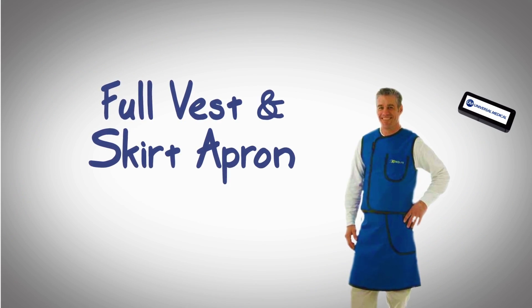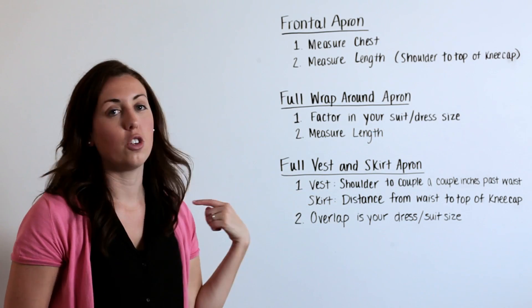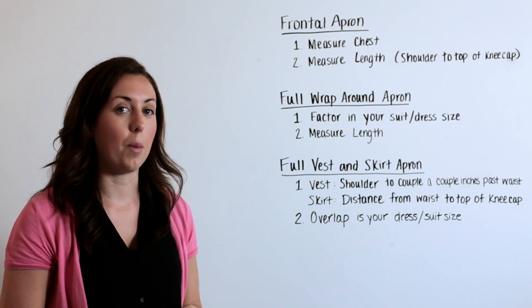If you have a full vest and skirt apron, for the vest, you're going to want to measure the shoulder to a couple of inches past the waist.